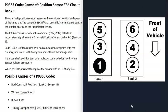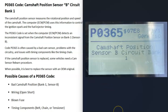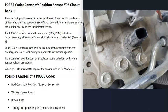If you have a V6 or V8 engine, there are going to be two banks on the engine. Bank one is always the side of the engine with the number one cylinder, so if you find the number one cylinder on your engine, that's bank one. The opposite side is bank two. With the P0365 code, bank one is the side of the engine the computer is seeing a problem with.